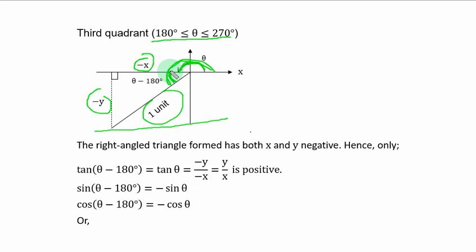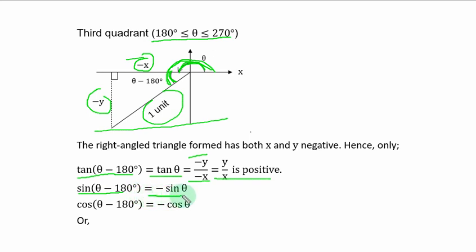It follows that tan(theta minus 180 degrees) is simply equal to tan theta. From the diagram, negative y is the opposite and negative x is the adjacent — if you divide a negative number by a negative number you have a positive result. Also sin(theta minus 180 degrees) is equal to negative sin theta, and cos(theta minus 180 degrees) is equal to negative cos theta.